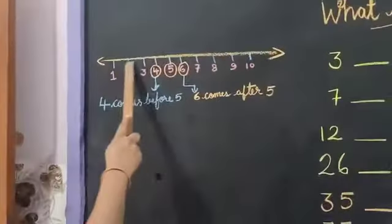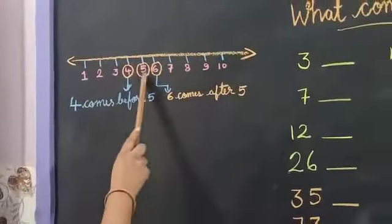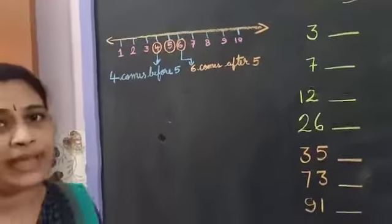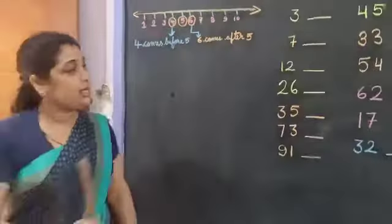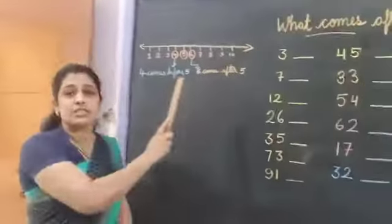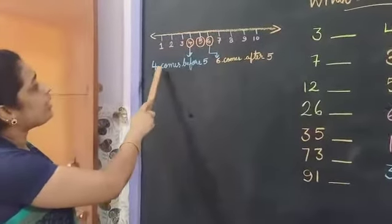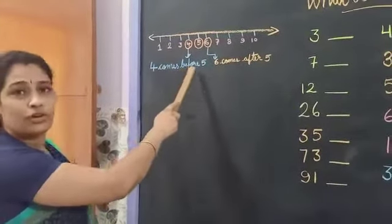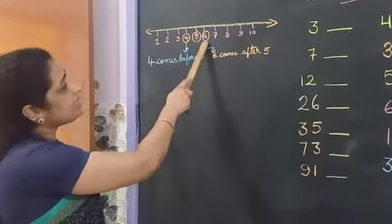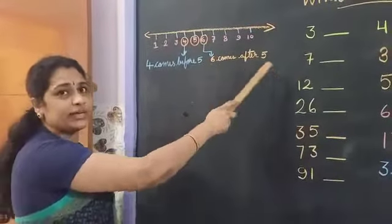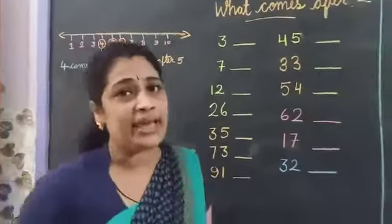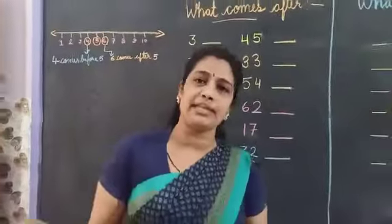Look at this number line. This number is 5. What is the before number of 5? It's 4. 4 is the before. Before means 'pehle' — first. And after means 'baad' — next. 4 comes before 5, and 6 comes after 5.